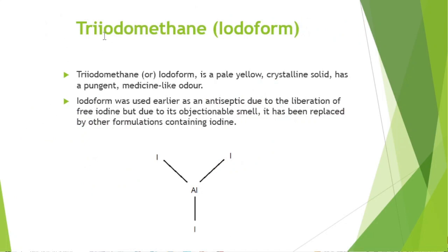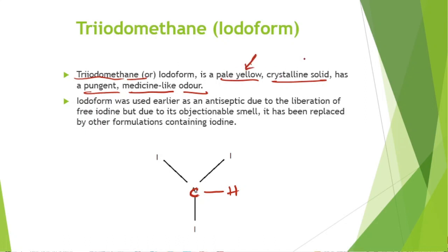Next is triiodmethane, also known as iodoform. Iodoform is a pale yellow crystalline solid with a pungent, medicine-like odor. It was earlier used as an antiseptic due to the liberation of free iodine, but due to its objectionable smell, it has been replaced by other iodine-containing formulations.